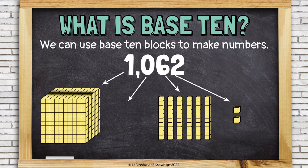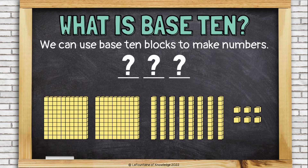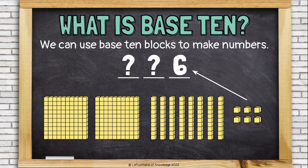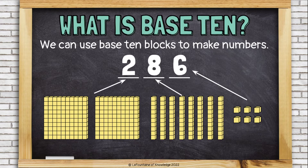Now let's work backwards. This time I can see the blocks and I need to figure out what number they represent. Let's start with the ones. I have 6 ones blocks, so I have a 6 in the ones place of my number. I have 8 tens blocks, so I should put an 8 in the tens place — that's worth 80. And I have two hundreds blocks, so I'll have a 2 in my hundreds place. These blocks show the number 286.